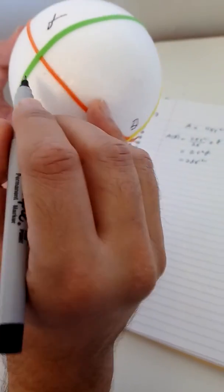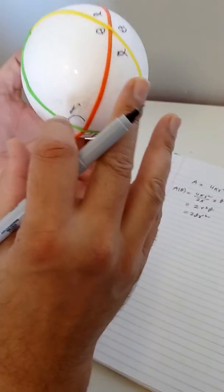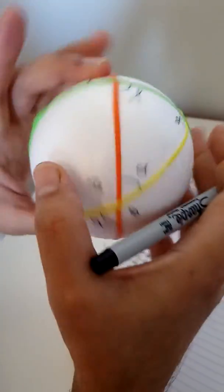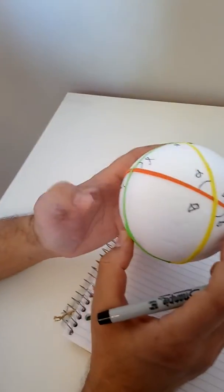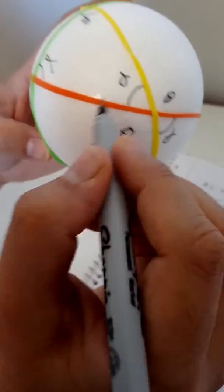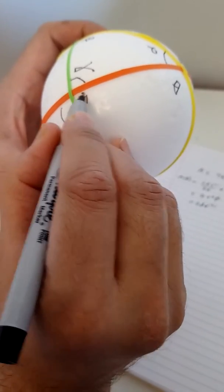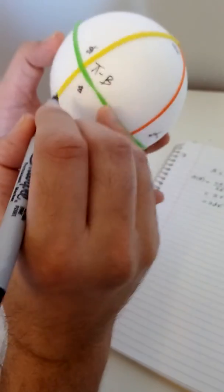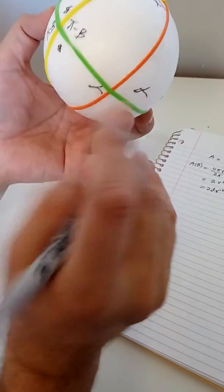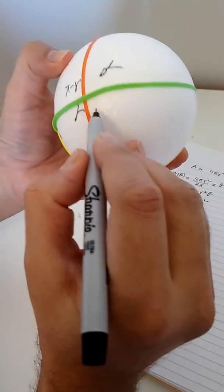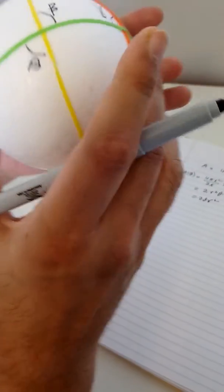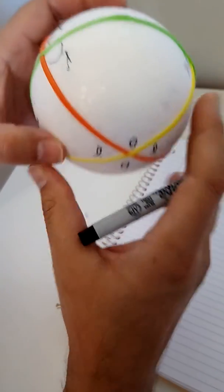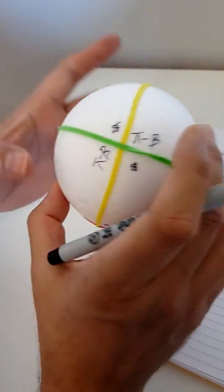This angle is also gamma. Now we need to define the remaining angles. If this angle is gamma, then the supplementary angle is π minus gamma. If this is beta, then the supplementary angle is π minus beta. So we have π minus gamma and π minus beta appearing around the sphere, and now all angles are defined.